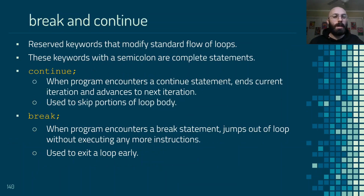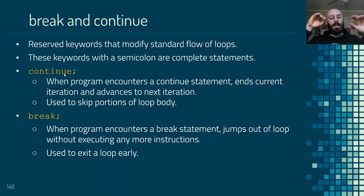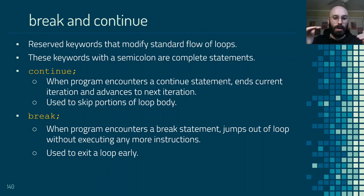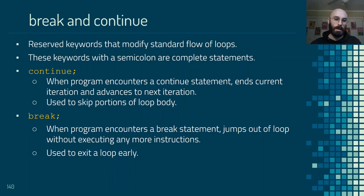To close out, there are two keywords that modify the standard way a loop operates: continue and break. They are complete statements on their own with a semicolon. The continue statement, when encountered inside a loop, ends the current iteration — it does not continue with the rest of the loop body. Instead, it goes back up to the next iteration, checks the condition, and if true, performs the loop body again. It is used to skip portions of the loop body and is typically placed inside a conditional statement within a loop.